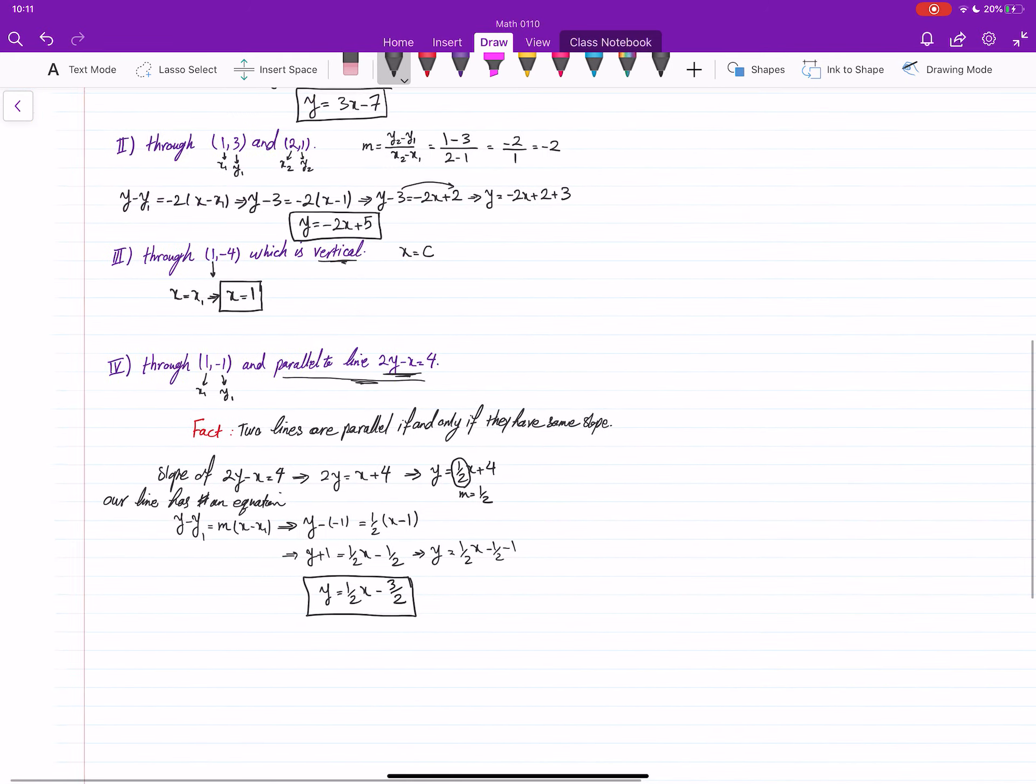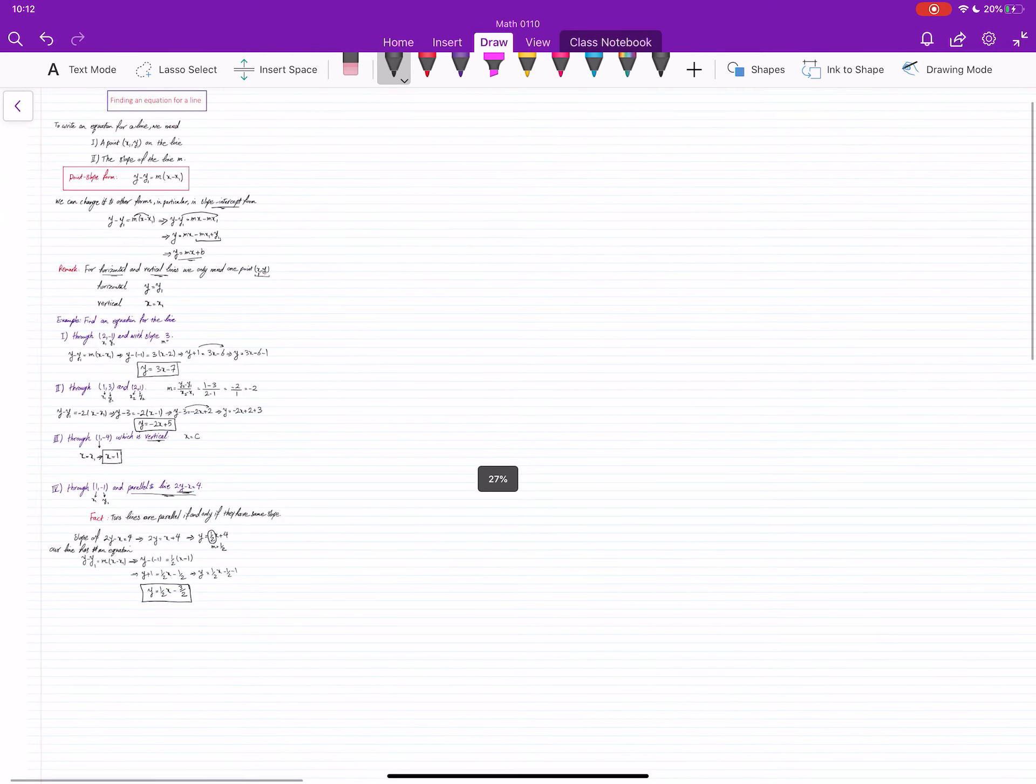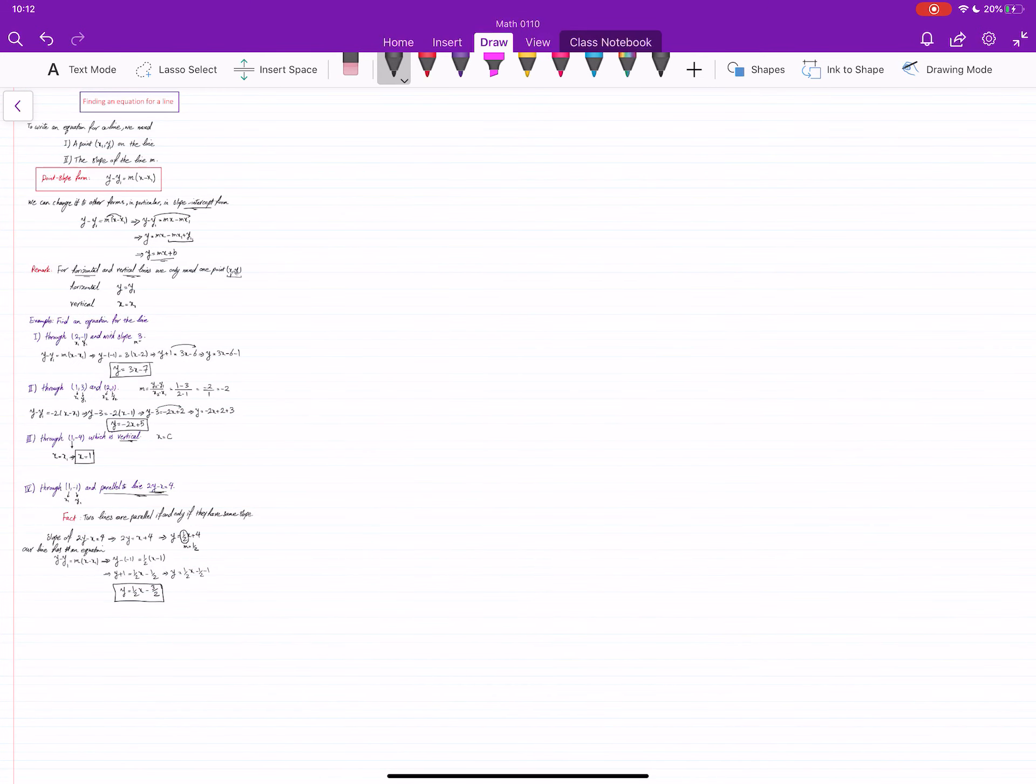So we just learned how to write an equation for a line if we know a point and slope. This is called point-slope form. And as I said, what I need you to do for this course is always turn point-slope form into the slope-intercept form, which is y equals mx plus b. Then we did some examples for that.